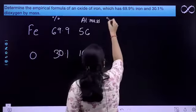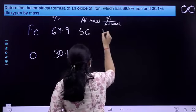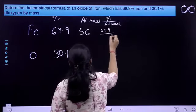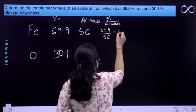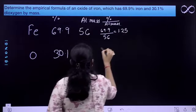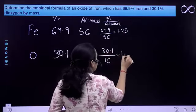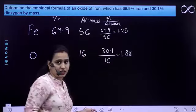What we will do is, we will divide this percentage by the atomic mass. So, 69.9 divided by 56, it will come out to be approximately 1.25 and we will divide this 30.1 by 16. It will come out to be approximately 1.88.